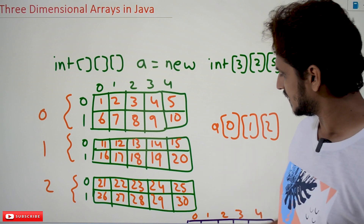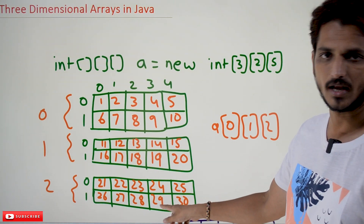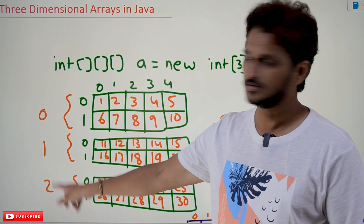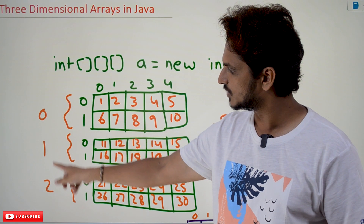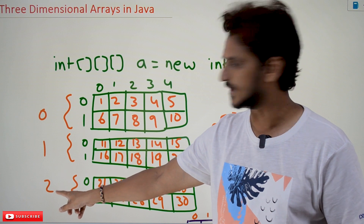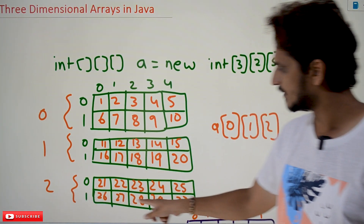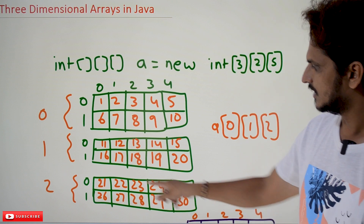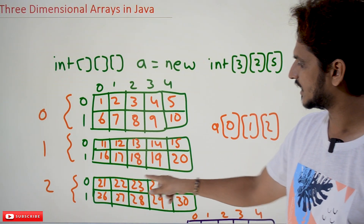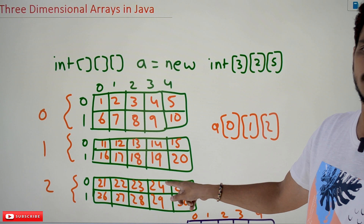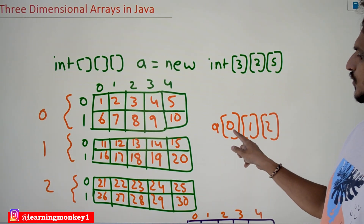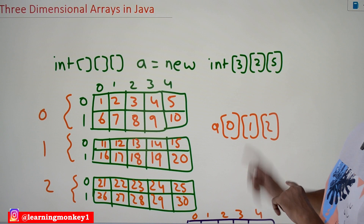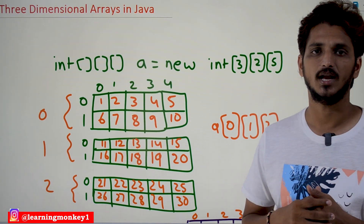Suppose you want to access another element — 29. The second two-dimensional array is at index two (zeroth, first, second). In that second two-dimensional array, you need the first line, third column (zero, one, two, three). So the access is a[2][1][3].